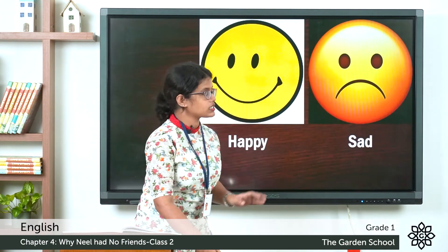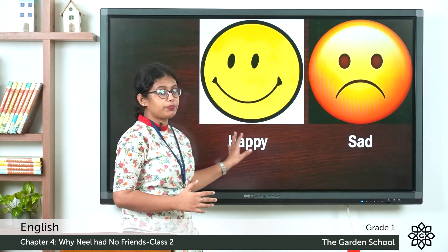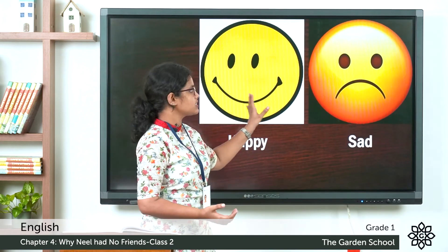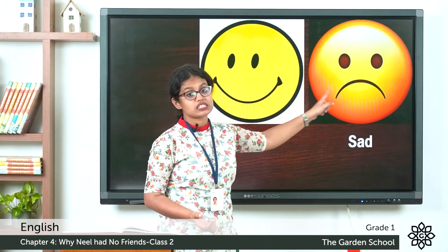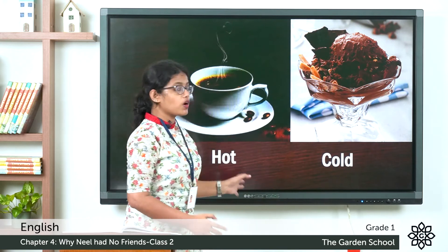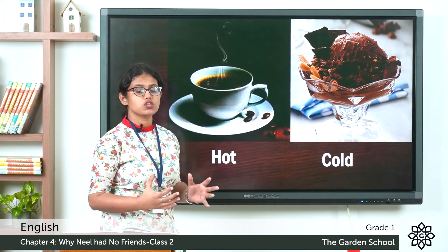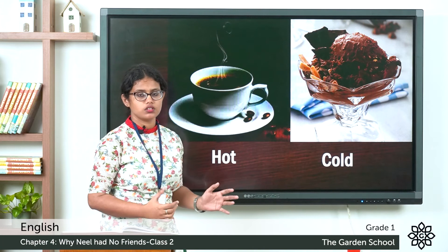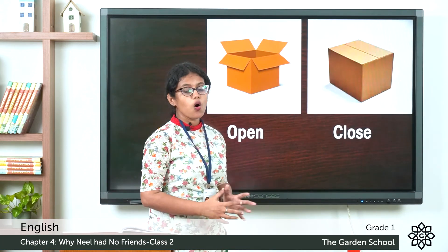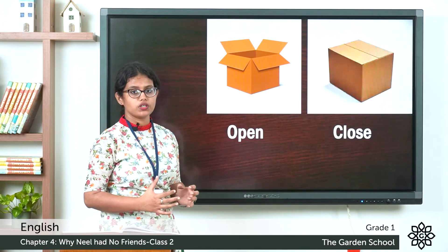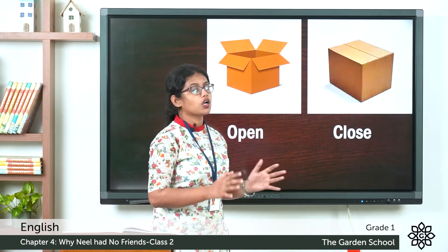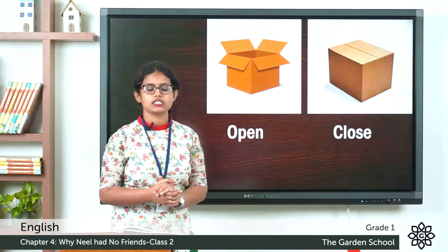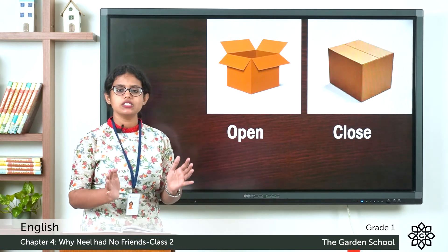Let us see some more opposite words. Happy — what is the opposite of happy? Sad. You can see the smiley here: happy face, sad face. What about cold? The opposite of cold is hot. Open — what is the opposite word for open? A closed box. So open and closed. These are some more opposite words.